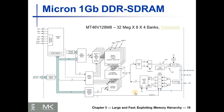This is an example of a modern DRAM: a 32 mega by 8-bit, four-bank configuration. Here are the four banks, and this is a 32 mega by four banks with 16 bits in each cell.